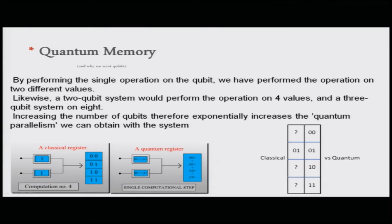The concept of qubits leads to quantum parallelism. Performing a single operation on one qubit operates on two different values simultaneously; a two-qubit system operates on four values, a three-qubit system on eight — that is 2 to the power of the number of qubits. A classical computer can only do one at a time, whereas a quantum computer does all simultaneously, so increasing the number of qubits exponentially increases the quantum parallelism obtainable.